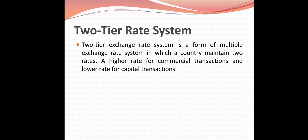The two-tiered exchange rate system is a form of multiple exchange rate system in which a country maintains two rates: a higher rate for commercial transactions and a lower rate for capital transactions. So if it is a commercial transaction involving buying and selling, a higher exchange rate applies; if it is a capital transaction involving shares, bonds, or securities, a lower exchange rate applies.